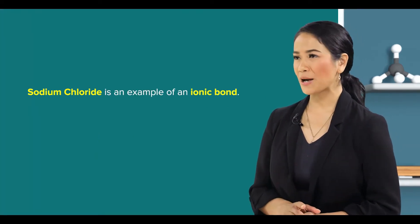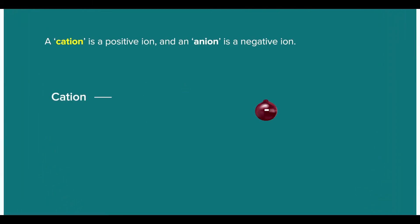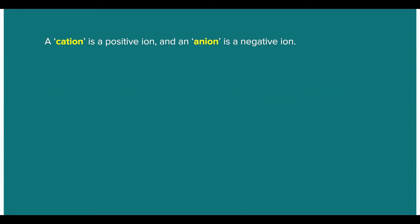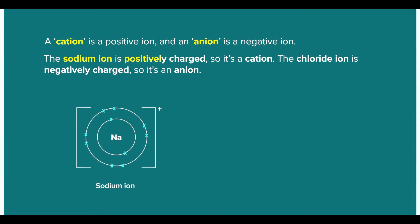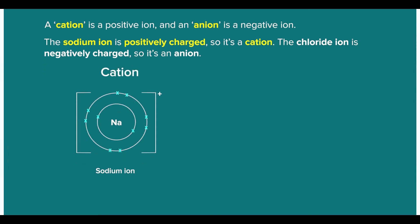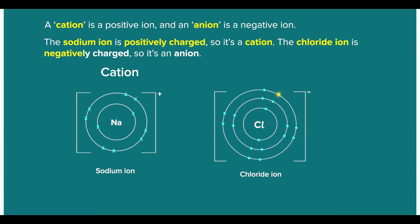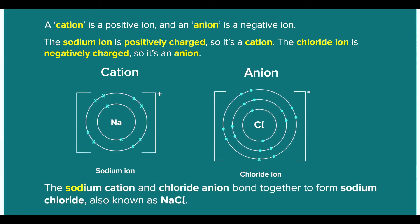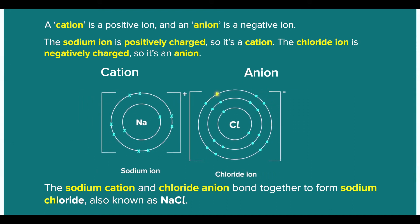In the meantime, I would like to introduce you to two new terms: cation and anion. A cation is a positive ion and an anion is a negative ion. The sodium ion is positively charged, so it's a cation. The chloride ion is a negatively charged ion, so it's an anion. You may say that the sodium cation and chloride anion bond together to form sodium chloride.